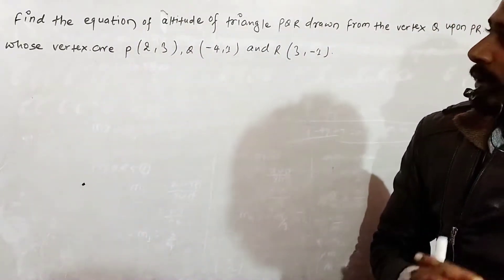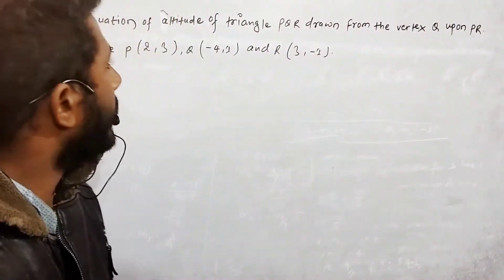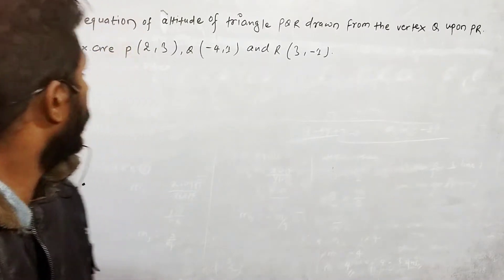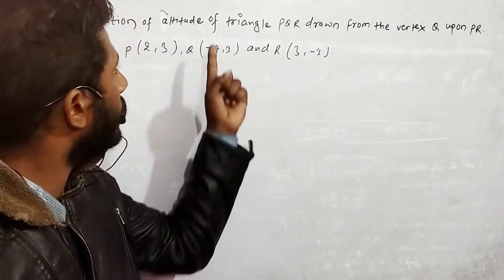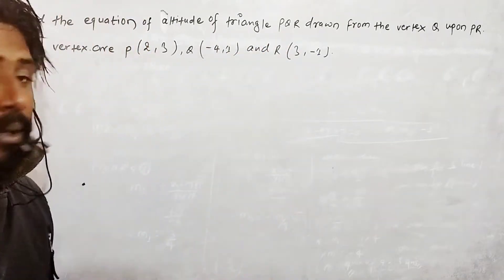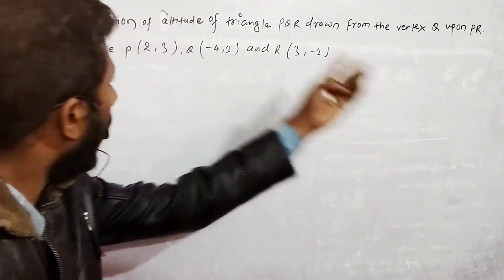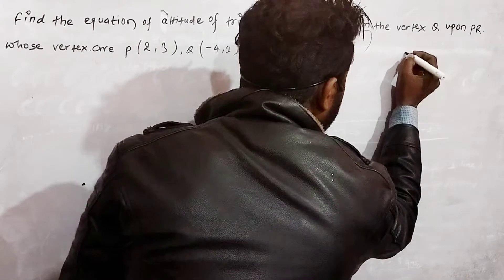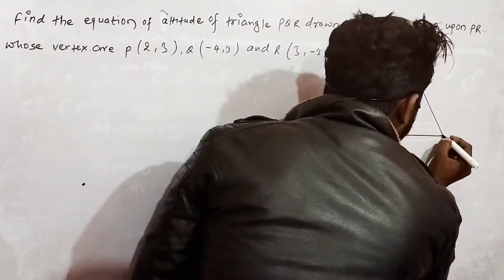We have a question about DLE. What does this question mean? Find the equation of the altitude of triangle PQR. We have to learn this, so we can work through it here. PQR is a triangle, so we will draw triangle PQR.